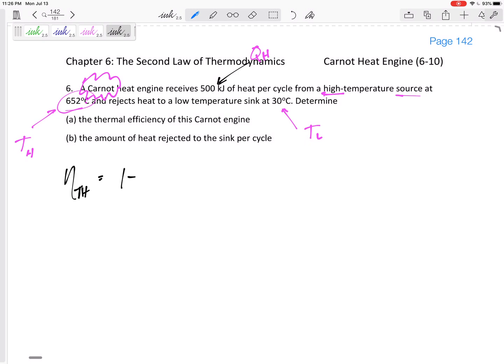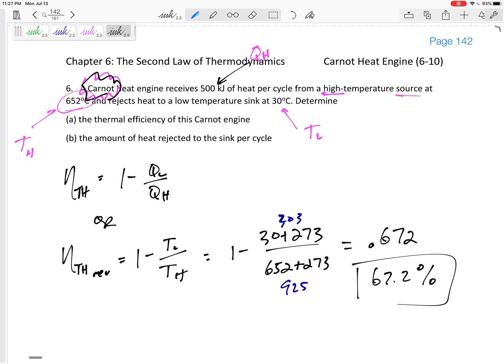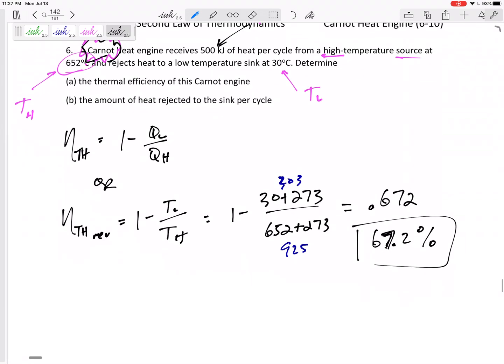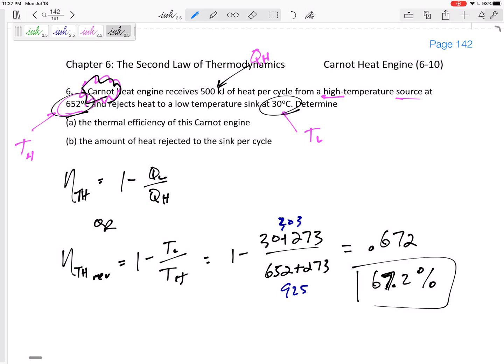The thermal efficiency for a heat engine is one minus QL over QH. I have QH but don't have QL. Or, the thermal efficiency for a Carnot is one minus TL over TH. One minus, but I can't just do 30 - I've got to convert it to Kelvin. 30 plus 273 over 652 plus 273. You see mathematically how 30 over 652 is different from 303 over 925. This is 0.672 or 67.2 percent. That is the thermal efficiency of this Carnot heat engine that operates between a source at 652 and a sink at 30 degrees Celsius.